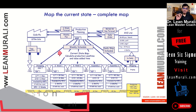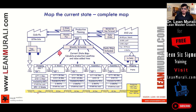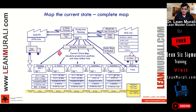What is value-adding is something we already explained. It has to physically change the form, fit, or function. It has to be done right the first time. And the customer should be willing to pay for that activity — these are the three conditions. Stamping is a value-adding activity provided it is done right the first time. Welding is a value-added activity. Assembly is a value-added activity because it changes form, fit, or function, done right the first time, and the customer needs that assembly.